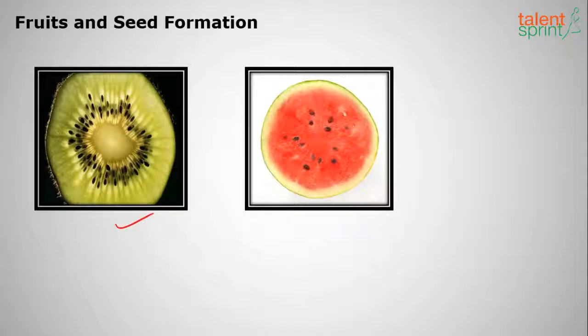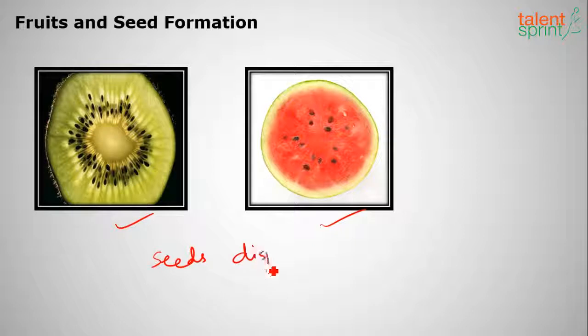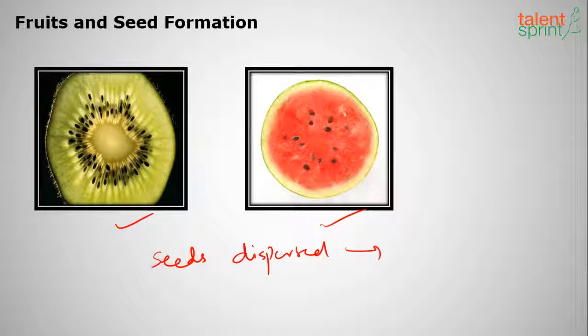When we look at the cross-section of a fruit, we can see the seeds inside. These seeds can be dispersed and, when germinated, a new plant may grow — as seen with mango, apples, and similar fruits. The fruit is a ripened ovary, and the seeds within it are developed ovules containing the embryo. When these seeds are planted, they grow into new plants. This concludes our session on sexual reproduction in plants. Thank you so much.